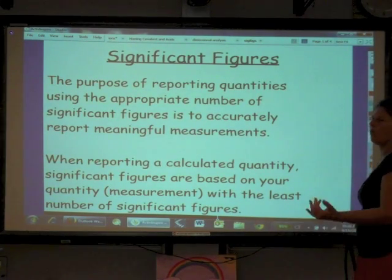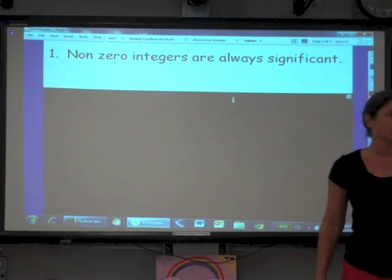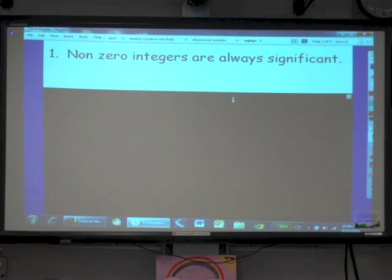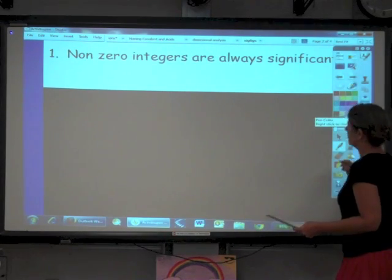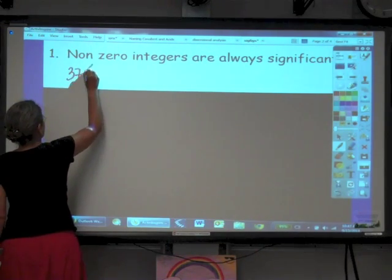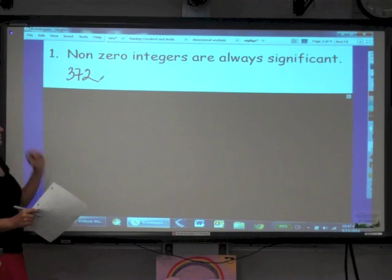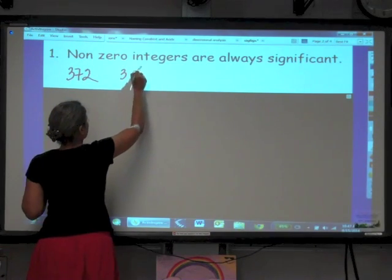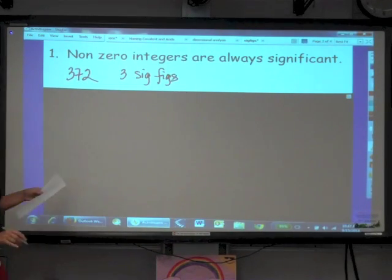So how do we determine what figures, what numbers are significant and what aren't? Non-zero integers are always significant. So for instance, a number like 372. These are all non-zero integers. So that means that this number has three sig figs, three significant figures.